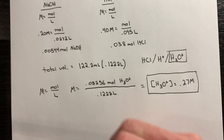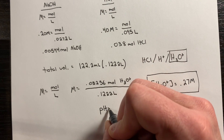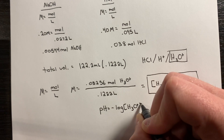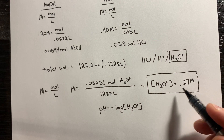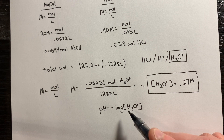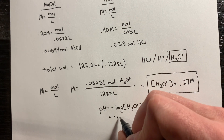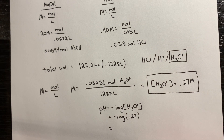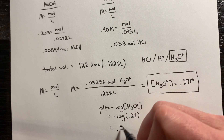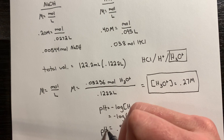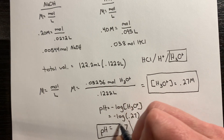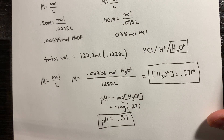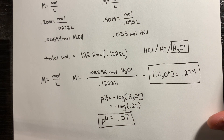Now that I have that value in hand, pH is equal to the negative log of the hydronium concentration. Plugging in the 0.27 molar value: pH equals the negative log of 0.27, which is 0.57. That is the overall pH of the solution — a rather acidic solution at 0.57. Let's move on to another example.